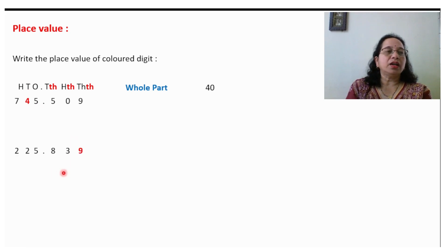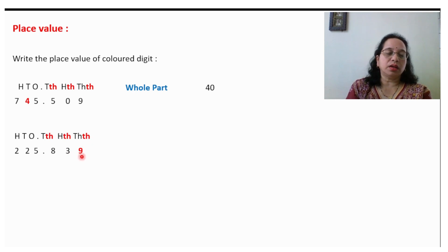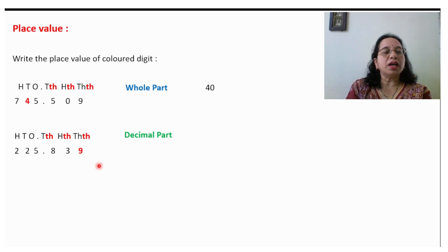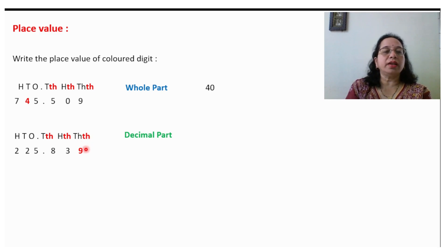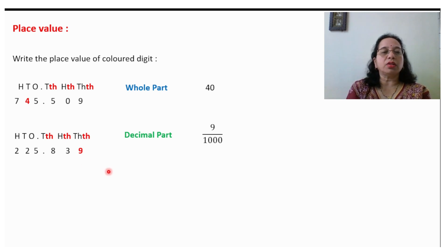Take another example. Write down the places. The colored digit is in the decimal part. So the answer will be a fraction. If 9 is in the thousandths place, the 'th' means 1000 will come in the denominator — so the place value is 9 upon 1000.